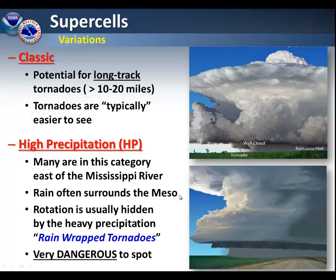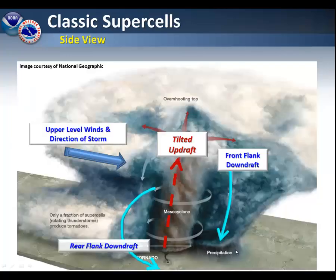Here in central Illinois, most of our supercells tend to be in the high precipitation category. Rain surrounds the mesocyclone, and any rotation subsequently is usually hidden by the heavy precipitation. In this particular image in the lower right, you cannot see exactly where the tornado is occurring. These type of supercells are very dangerous to spot.